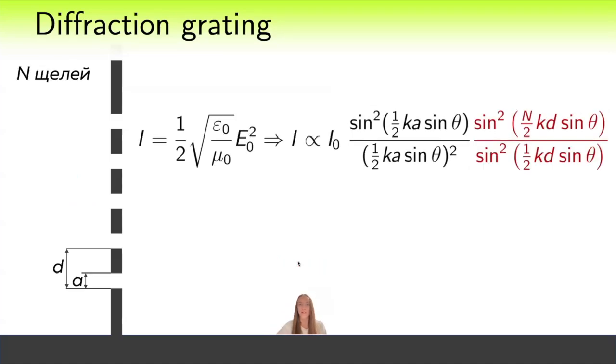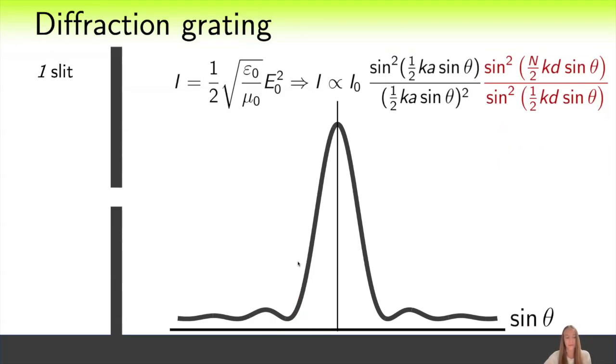Knowing the amplitude, we can easily find the expression for the intensity and can plot the graph of the intensity dependence on the sine of the angle theta. For a single slit, it looks like this.